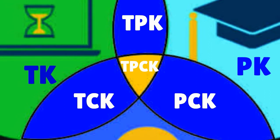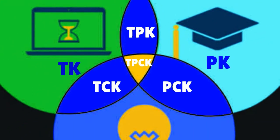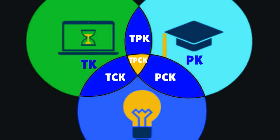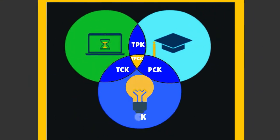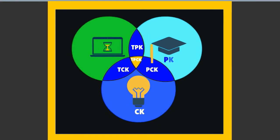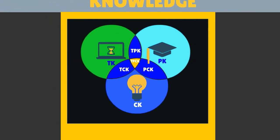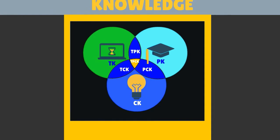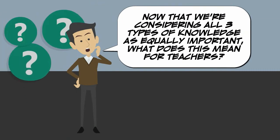On the outside we have the other ways we can teach, combining the types of knowledge we have. Traditionally, teachers have looked at content first, then pedagogy, with a consideration for technology. But with the T-Pack framework, we consider all three components as peers. Now that we're considering all three types of knowledge as equally important, what does this mean for teachers?